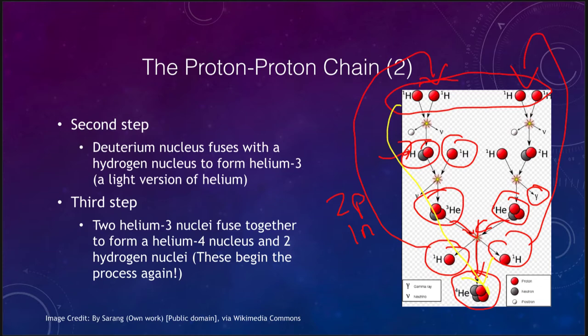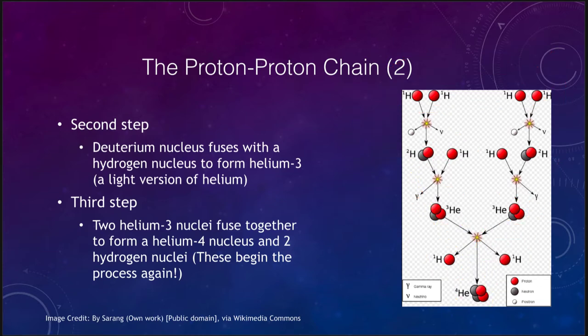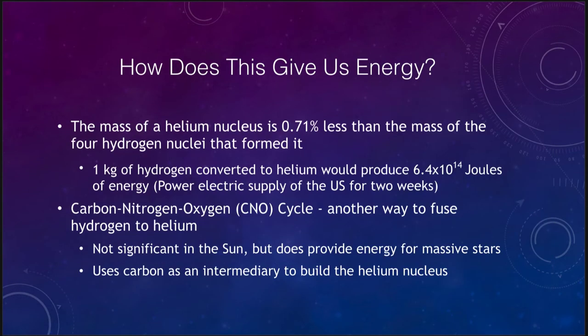How does this give us energy? Why does this give us energy when this occurs? The difference in the mass of the helium nucleus and the mass of the hydrogen nuclei that formed it is about little less than one percent. We take that one percent of mass that is then converted to energy by E equals m c squared.